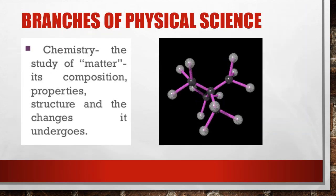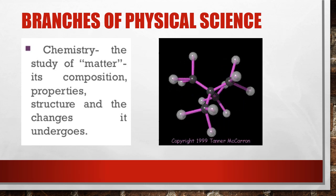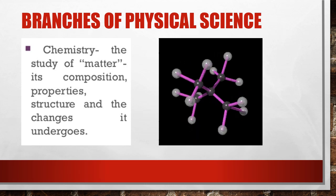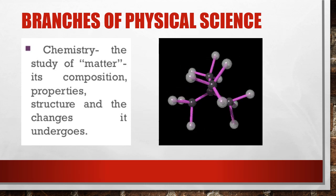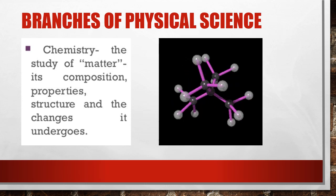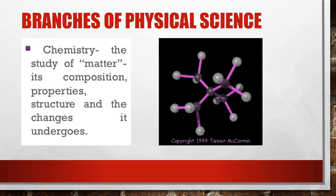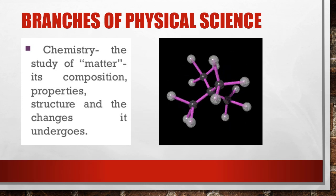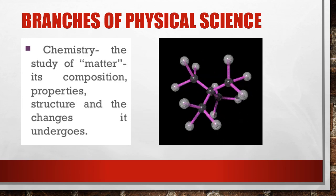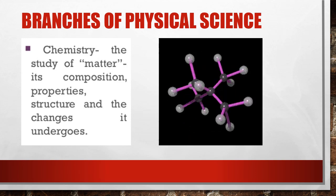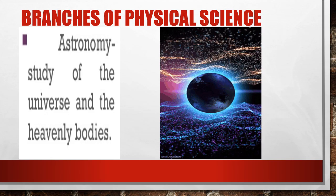Here are the branches of physical science. Chemistry is the study of matter, its composition, properties, structure, and the changes it undergoes. Astronomy is the study of the universe and the heavenly bodies.